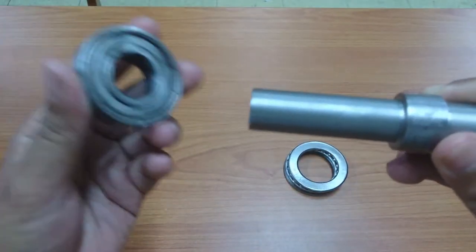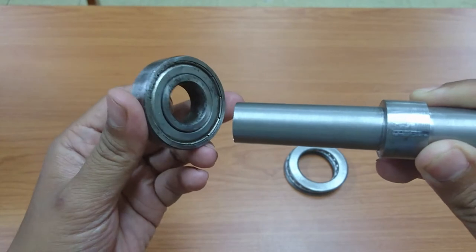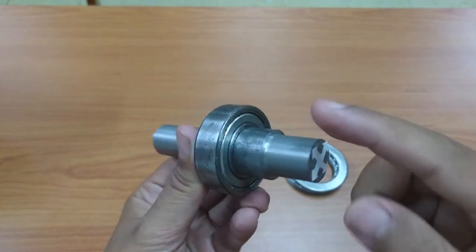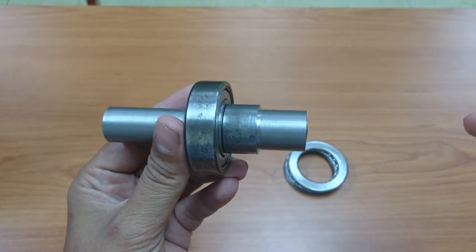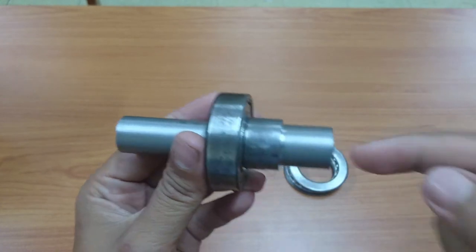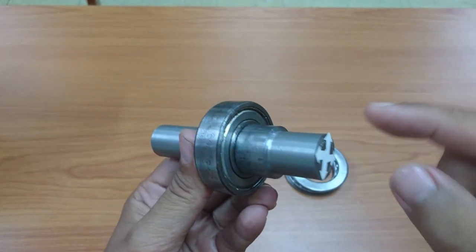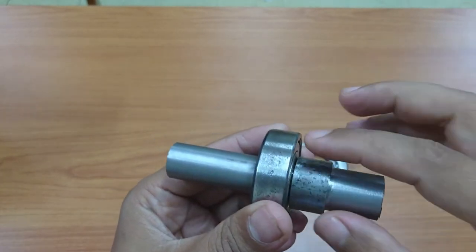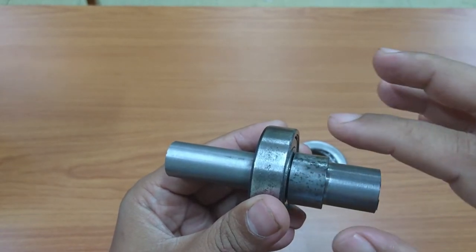But this bearing can only handle radial load only. This is the shaft and this is radial load. Radial load is the load that perpendicular with shaft axis. So the load is to go out. See, this is the direction of the load. So this is a radial bearing because it only handles most of the radial load.